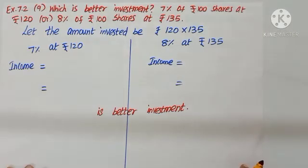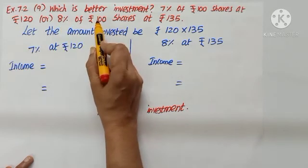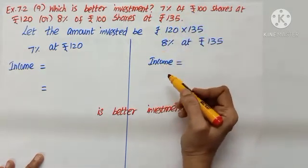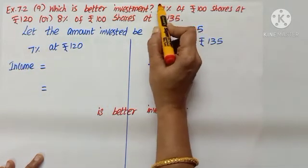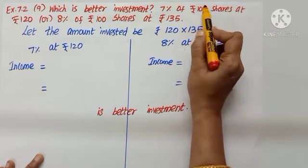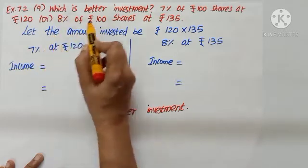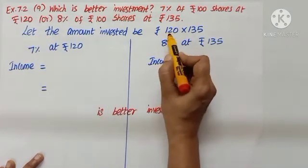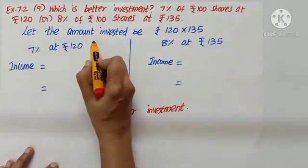Question number 9. Which is better investment? 7% of Rs. 100 shares at Rs. 120, or 8% of Rs. 100 shares at Rs. 135. We are given 2 types of investments and we need to decide which is better. Here the amount is 120. When you read the problem, this is rate percentage. Rs. 100 shares tell me this is face value. At 120 tells me this is market value. Similarly, 8% is rate percentage. Rs. 100 tells me face value. At Rs. 135 tells me market value. So both the market values, let me consider as a product for the amount to be invested. To ease my calculation, let us find out the income separately.